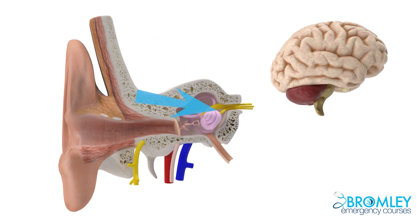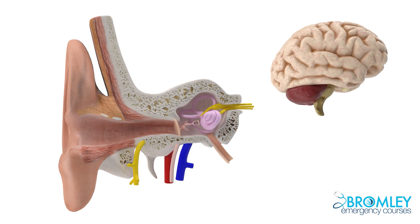The nerve itself carries these sensory inputs to the brain, passing through the internal acoustic foramen into the posterior fossa. Both the vestibular and cochlear parts of the eighth nerve run next to each other before combining and entering the brain, and the facial nerve runs alongside them. This is the site where acoustic neuromas develop.